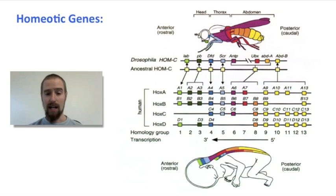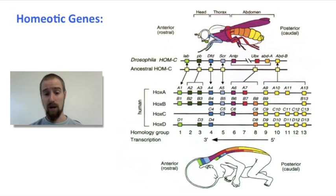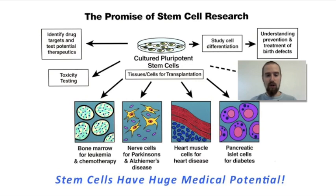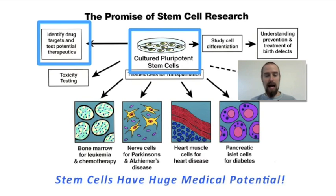Knowing how and why stem cells differentiate and specialize to do certain jobs and form certain structures in the body is of great interest to the medical community, because if we can learn how to control this process, we may be able to invent new forms of medicine to treat diseases and conditions for which we currently have no cure. The promise of stem cell research is nearly limitless, and there is a lot of real promise based on what we already know. Stem cells grown in the lab, for example, can be used to test new drugs, medicines, antibiotics, and therapies.